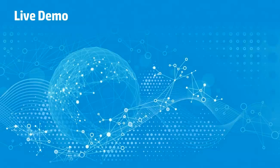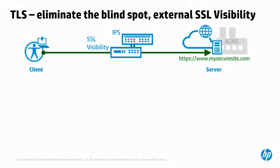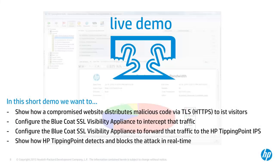Let's see how easy it is to implement the BlueCode SSL Visibility Appliance and how powerful its policies are to cover the SSL blind spots in a short live demonstration. In the first use case, we will inspect TLS traffic coming in from the Internet to an HTTPS web server within the DMZ of our organization. We will compromise a website in the lab, place malicious code on it, and then browse to that website first without SSL visibility and then with SSL visibility in place.